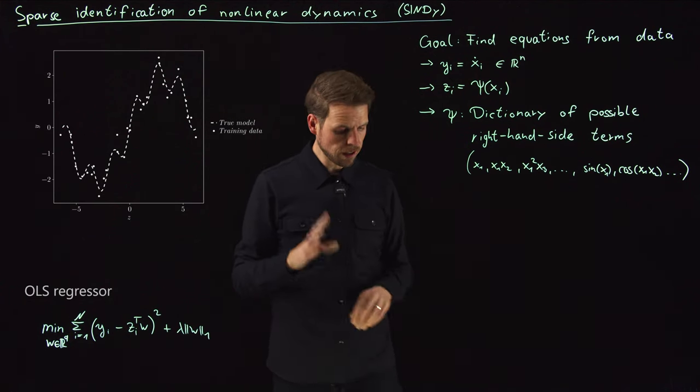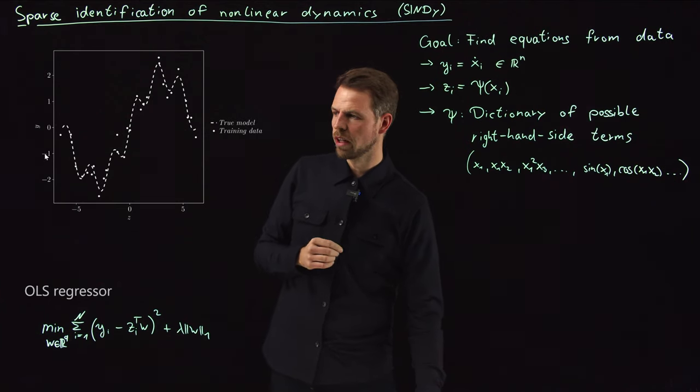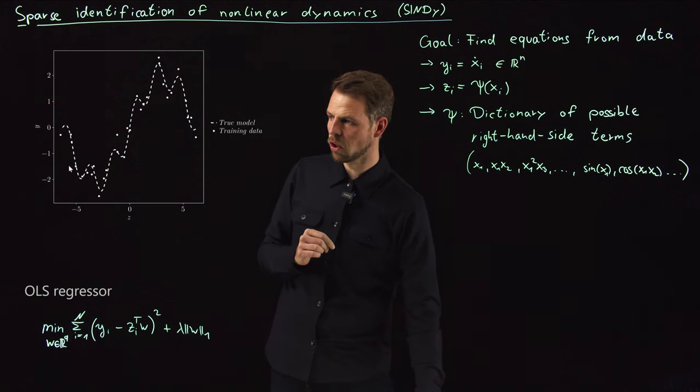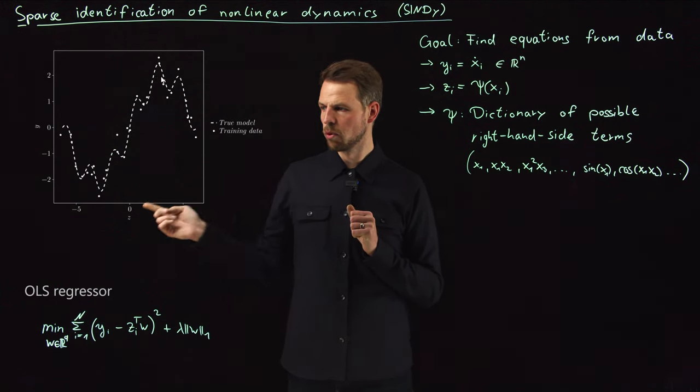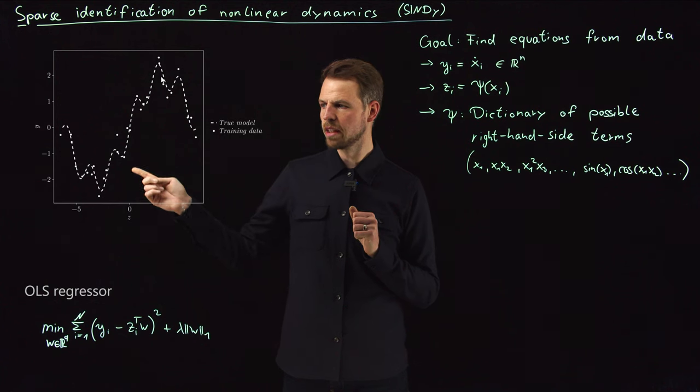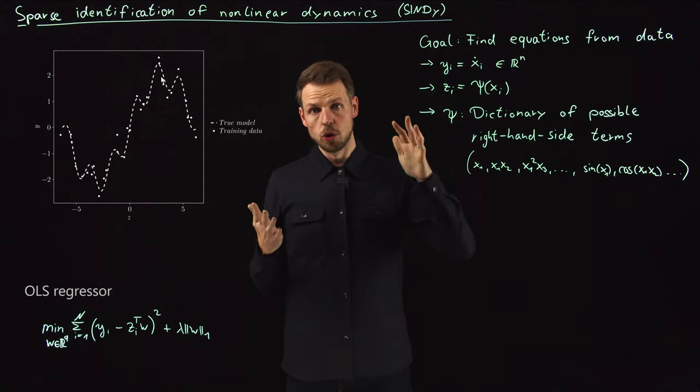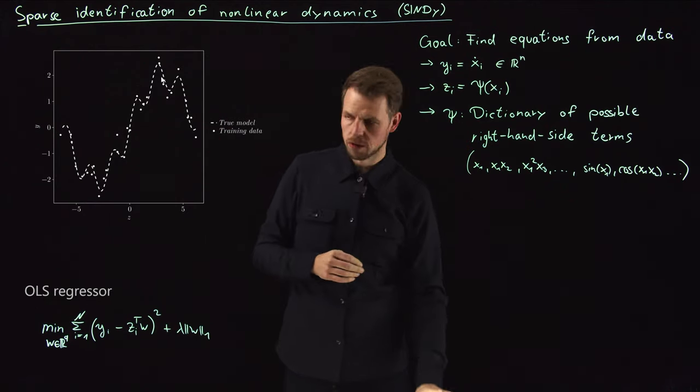But before we get there, let's start with a little code example. Here I've more or less randomly created a superposition of two sine functions with different frequencies and then added Gaussian noise to get these points that are going to be our data points. In this case the input is one dimensional and the output is one dimensional. And I'm trying to fit a polynomial dictionary term, so polynomials to these points.